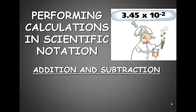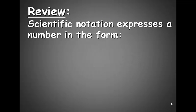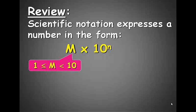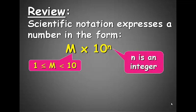We can use numbers that are in scientific notation to form calculations very easily. Let's do some addition and subtraction. But before we get there, let's review. Scientific notation expresses a number in the form of m times 10 to the nth, where m is a number that is greater than 1 but less than 10, and n is either a positive or negative whole number integer.